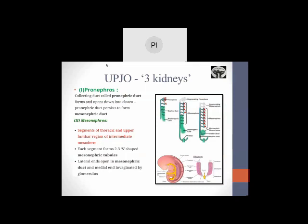Coming to the 3 kidneys: the pronephros, mesonephros, and metanephros and their relation to this disease. The pronephric collecting duct persists to form the mesonephric duct. The mesonephros develops in the thoracic and upper lumbar regions with S-shaped tubules that later disappear. The metanephros gives rise to the definitive kidney.